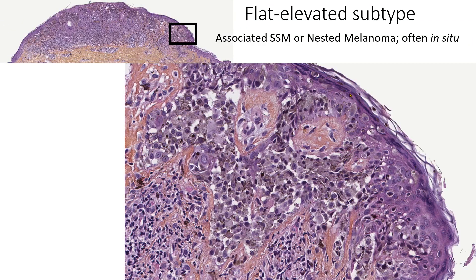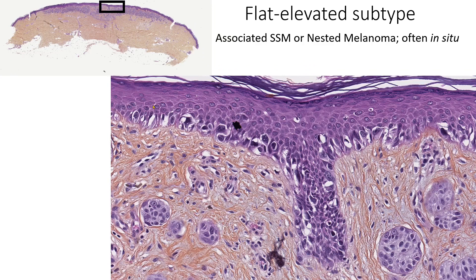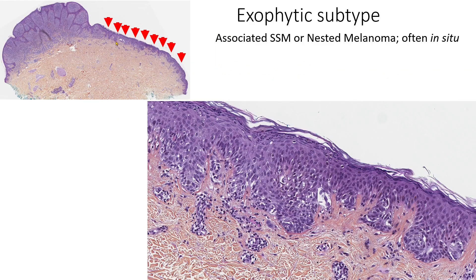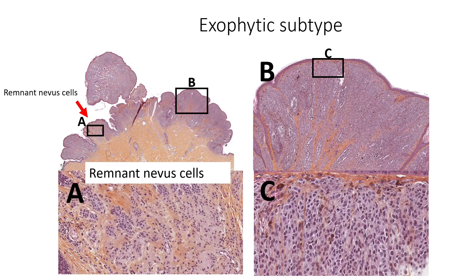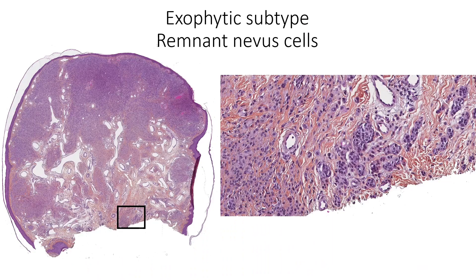Here are some examples: a pagetoid scatter of pagetoid cells in one case, or just a junctional lentiginous component. Some other examples show a really asymmetrical distribution. In some cases we will find small remnants of nevus cells, often with very focal distribution.